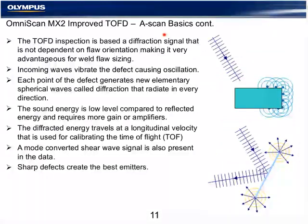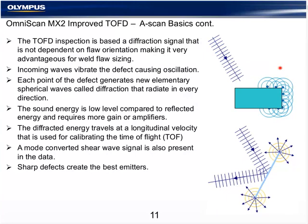TOFD inspection is based on a diffraction signal, not dependent on flaw orientation, which makes it very advantageous for weld inspection. Incoming waves vibrate in every direction and radiate energy. The sound energy is very low level compared to reflected energy, and the diffracted energy travels at a fixed longitudinal velocity that can be calibrated. Sharp defects, lack of fusion, cracks, and linear-type indications create the best emitters.